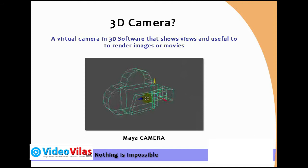It looks like a camera. The main thing is the view. If you are looking at 3D objects, you can see low-angle, high-angle, and different angles.